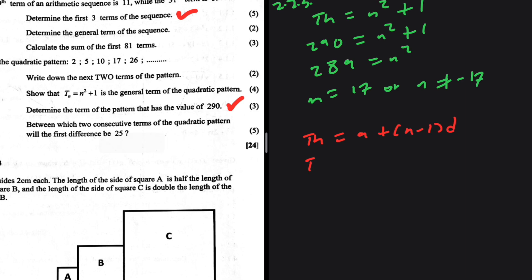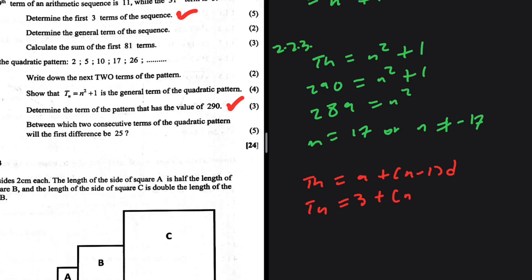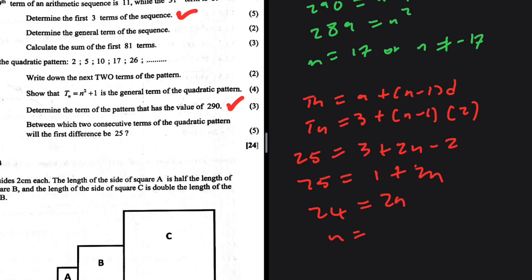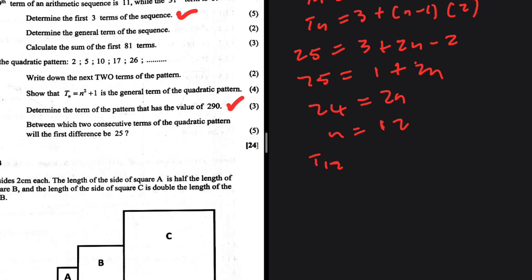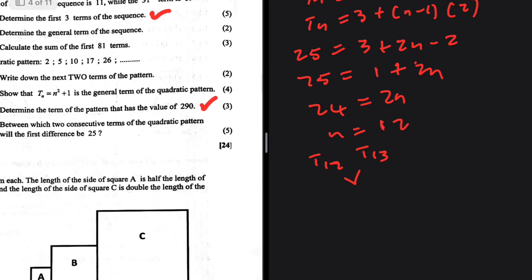Using tn equals a plus n minus 1 times d, we look for position of 25: 25 equals 3 plus n minus 1 times 2, so 25 equals 1 plus 2n, giving 24 equals 2n, so n equals 12. This means the first difference of 25 occurs between t12 and t13 of the quadratic pattern.